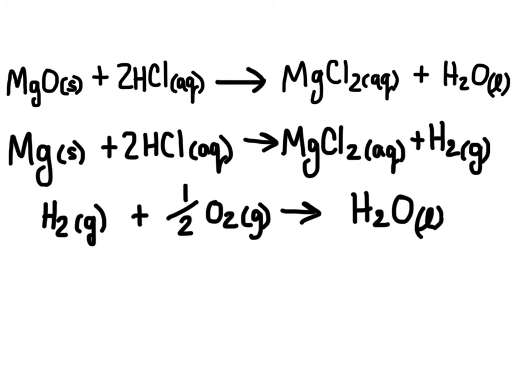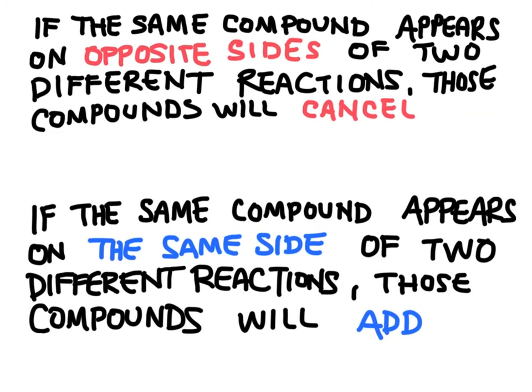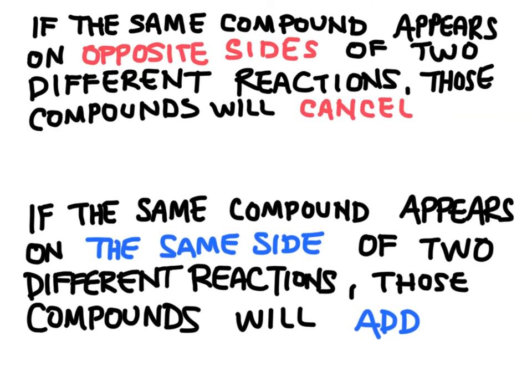Here's how Hess's law works. There are two rules we follow when adding chemical reactions together. If the same compound appears on opposite sides of two different reactions, those compounds cancel each other. If the same compound appears on the same side of two different reactions, those compounds add to each other.